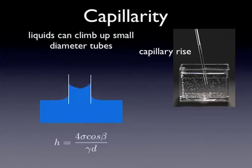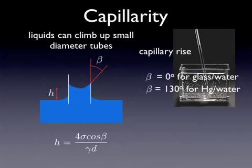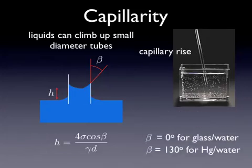It's described by this equation, which is in your FE handbook, where H is the capillary rise, and it's 4 times sigma. That's the same sigma we talked about with surface tension. It's 4 times sigma times the cosine of beta, where beta is the angle that the water makes when it impacts the glass. That's a measure of that attractive force. And for glass water, the beta is 0. For mercury water, for example, the beta is 130. And you can look up values for different types of interactions.